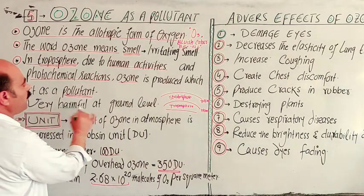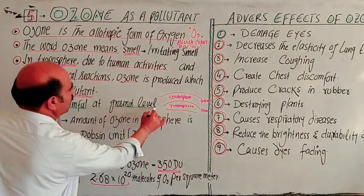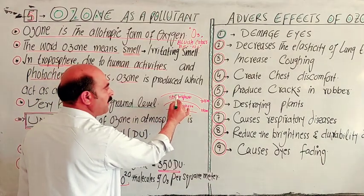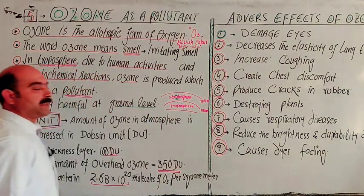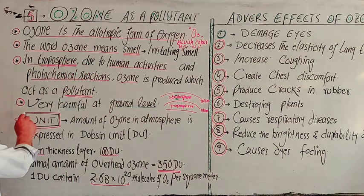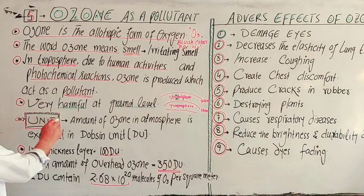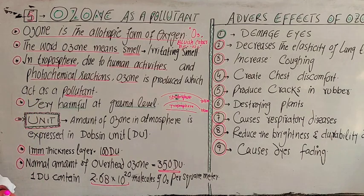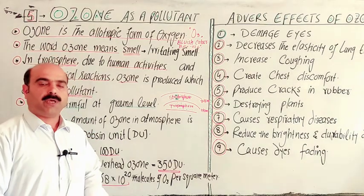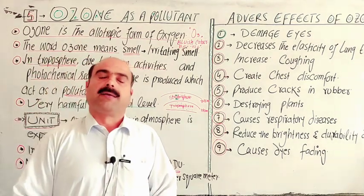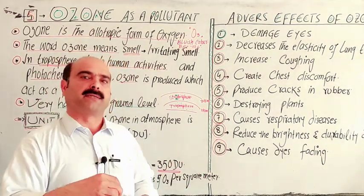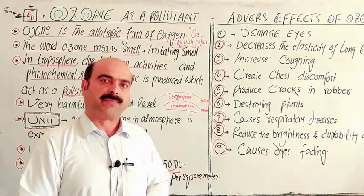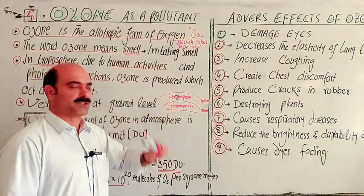At ground level, ozone is a pollutant and is harmful. At 20 to 25 kilometers altitude it is a protective layer. We are going to discuss in detail the formation, depletion, and the different positions in the atmosphere — both in the troposphere and stratosphere.